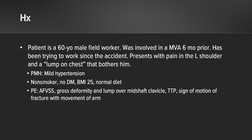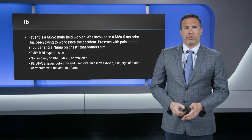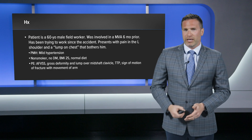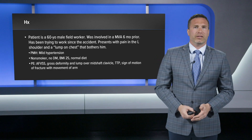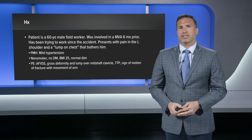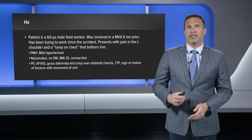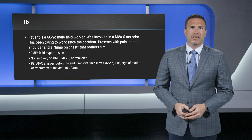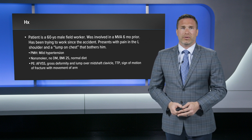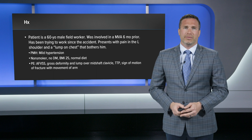His past medical history included some mild hypertension. Otherwise, he is a non-smoker, has no diabetes, and has a low body weight — his BMI is only 25. There was no evidence of anything that would make me worry about an infection, which is always something I look for when dealing with non-unions.